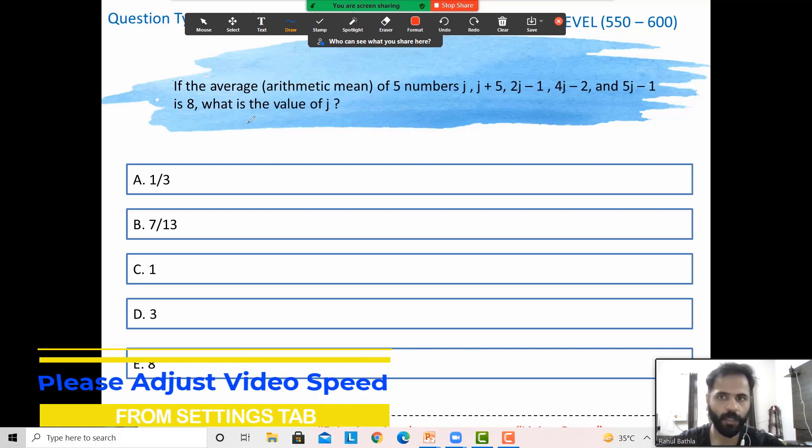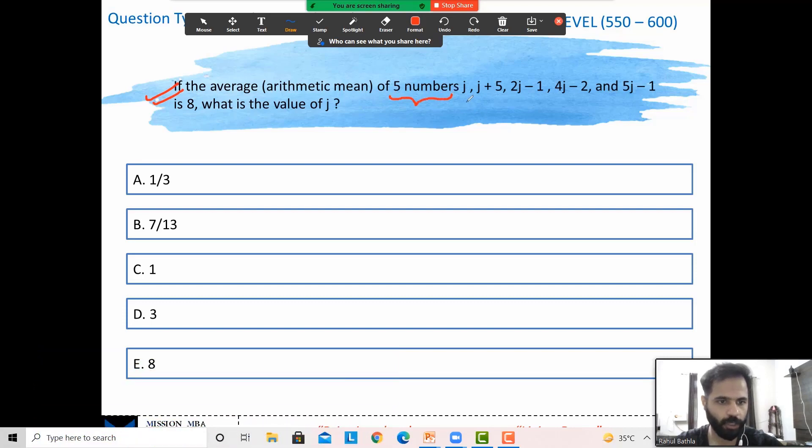Let's try the first question, a simple question on mean. What does the question say? We have five numbers: j, j+5, 2j-1, 4j-2, and 5j-1, all numbers in forms of j. The mean is given to us as 8. The question asks us, what is the value of j? Let's go ahead and calculate.